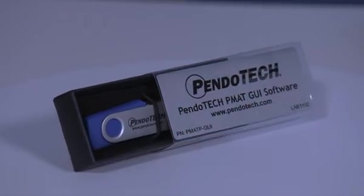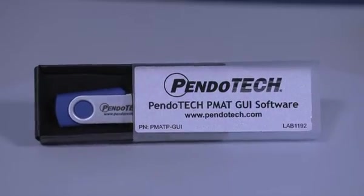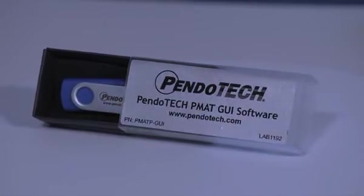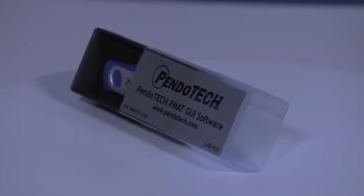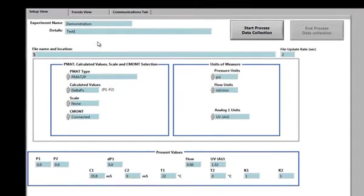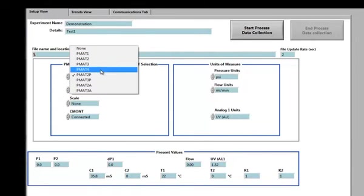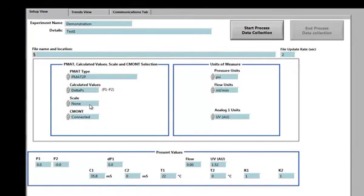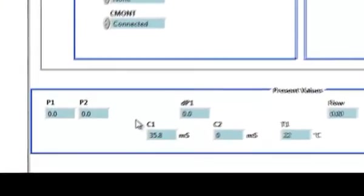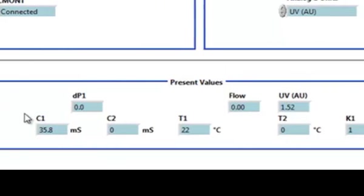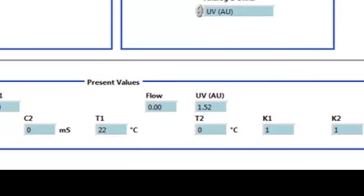Pendotech offers the PMAT Plus GUI software package that can be used to trend the data real time and log the data to a file for future use. This software can also log data simultaneously from the Pressure Mat or the Pressure Mat Plus monitor and one scale, creating a very powerful and inexpensive data acquisition system. The Pendotech CMANT conductivity temperature sensor monitor can also be connected to the computer. Then, its data readings appear at the bottom of the setup view for a total of nine possible data readings.